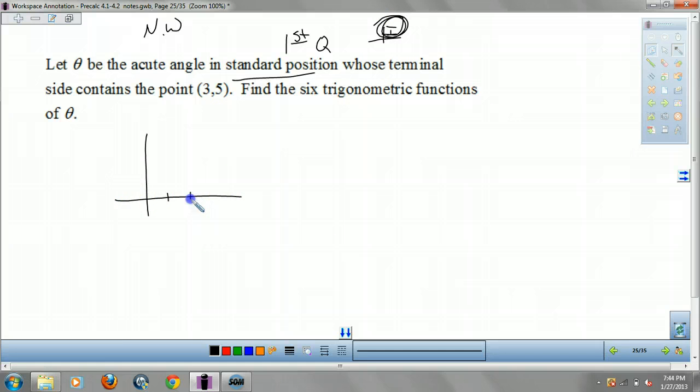So let the point (3, 5) be the terminal side of a triangle. Find these six trigonometric functions of theta. So this was my terminal side, right? So this must be my triangle. That's 3, we'll say. The length of this side is 3, right? The length of this side would be 5. Because we went over 3 for our x, up 5 for our y. And where's theta? Well, theta is this right here.